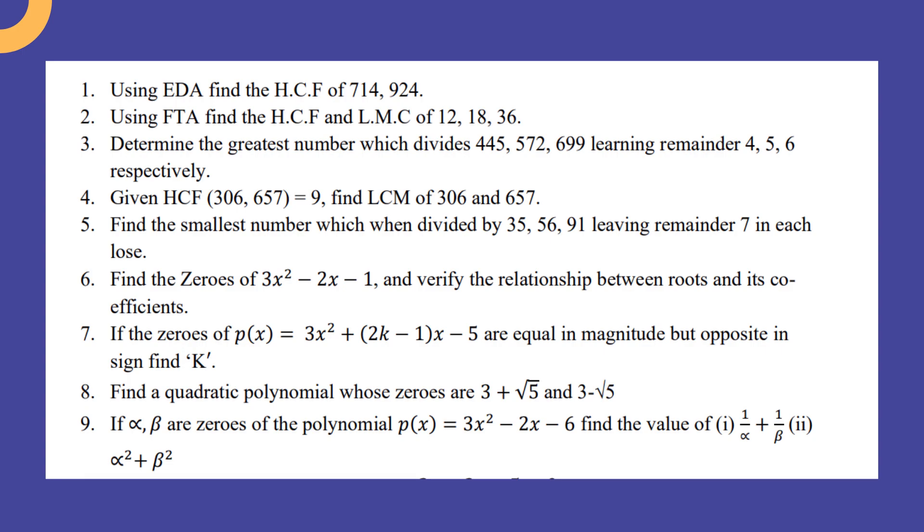Find the smallest number which when divided by 35, 56, 91 leaving remainder 7 in each case. Find the zeros of 3x² - 2x - 1 and verify the relationship between roots and its coefficient. If the zeros of p(x) = 3x² + (2k - 1)x - 5 are equal in magnitude but opposite in sign, find k. Find a quadratic polynomial whose zeros are 3 + √5 and 3 - √5.